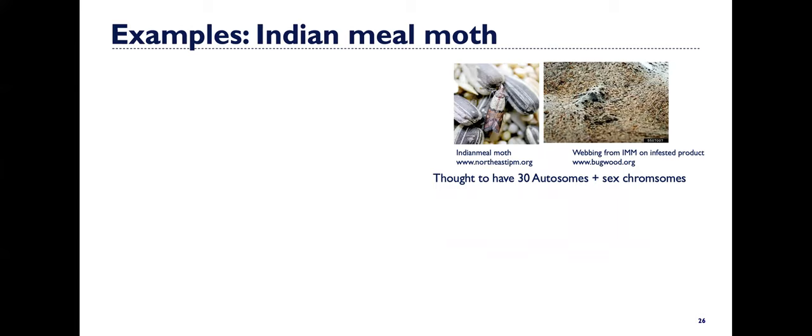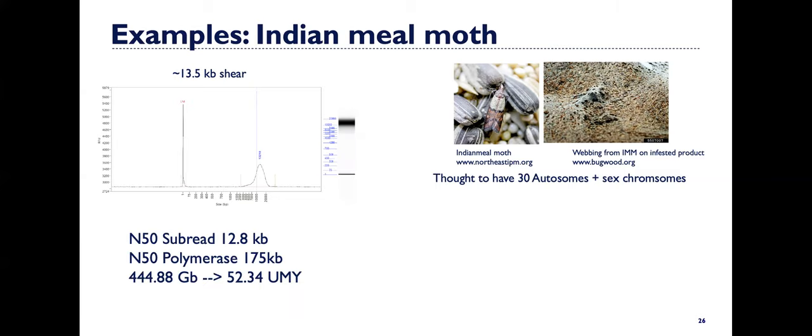I'm going to give you some successes that we had using HiFi data on a variety of types of insect pests. This first example is the Indian meal moth. It's a stored grain pest. This is the webbing of an Indian meal moth here on infested stored products. Not something you want to see. The one thing I want to just point out is this is assumed to have 30 autosomes and the sex chromosomes. Our shear, this is one of our earlier samples where we were targeting below 15 KB when we were still trying out the HiFi process. So we have a shear of around 13.5 KB shear. The reads coming off of that, the subreads, was 12.8 KB, so pretty close to that.